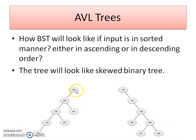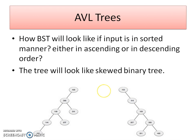If the data inserted is in descending order, the tree will look like a left skewed binary tree. If the data is in ascending order, the tree will look like a right skewed binary tree. In this case the time efficiency will be less for the binary search tree to perform different operations. So what is the solution?